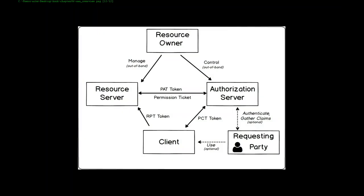Let's start with this diagram. UMA is a profile of OAuth 2. As you remember, we have three main actors in OAuth 2: the resource server — that's the thing with the APIs — the client, which is the software calling the APIs, and the authorization server, which issues tokens and evaluates policies. That's the Glue server, OXAuth. The basic purpose of UMA is that it's a mechanism to control access to APIs.